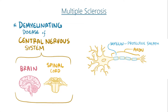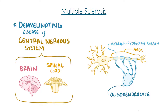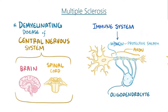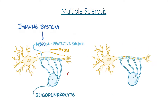MS also affects oligodendrocytes, the cells which produce myelin. Demyelination occurs when the immune system mistakenly attacks and destroys the myelin covering of axons. This damage leads to inflammation and scarring that disrupts communication between parts of the nervous system.